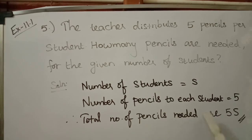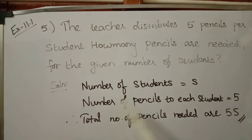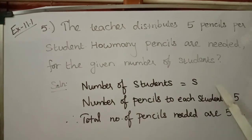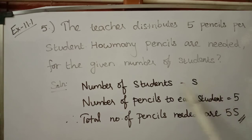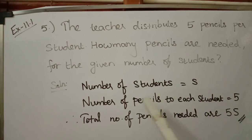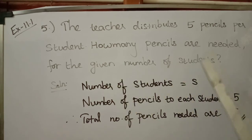What we need to understand here is: the number of pencils needed for each student is five, and the number of students is assumed as 's'. So the total number of pencils needed for all students is five into s, that is 5s. I choose 's' as the symbol variable, and for each student five pencils are needed, so for s students the total is 5s. Therefore the total number of pencils needed is 5s.